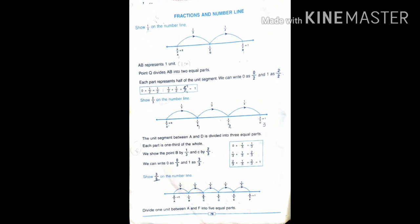And 1 is 2 by 2, so 2 by 2 equals 1. So it is 0 to 1 — distance 1 cm. We add 0 plus 1 by 2, so we add 1 by 2. And then 1 by 2 plus 1 by 2.